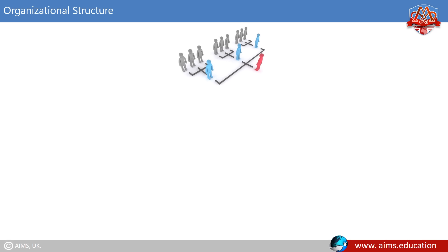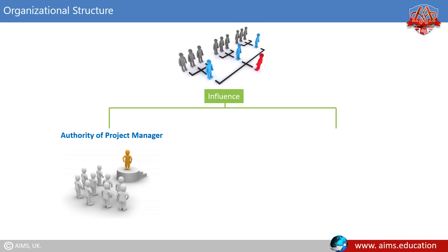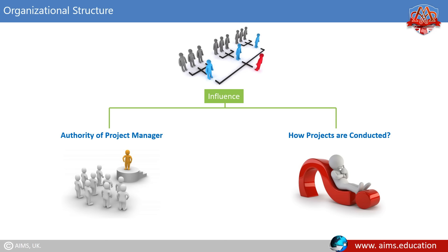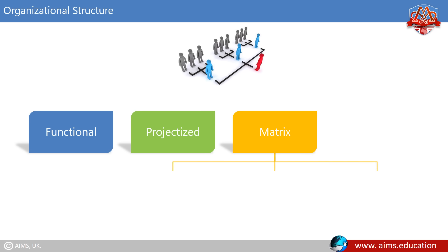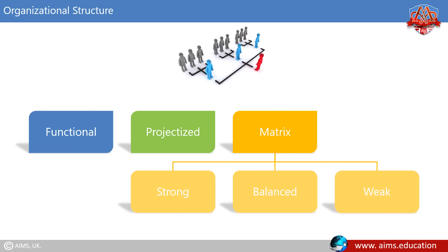Organizational structure influences the authority of the project manager and how projects are conducted. All organizations are structured in one of three ways: functional, projectized, or matrix. Matrix organization structure is further divided into three types: strong matrix, balanced matrix, and weak matrix.